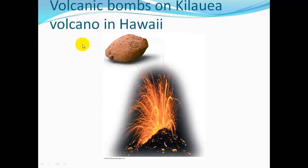Here's a volcanic bomb from Hawaii — ejected molten lava that solidified while flying through the air, which is why it forms this nice aerodynamic shape.